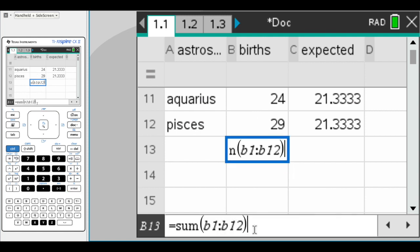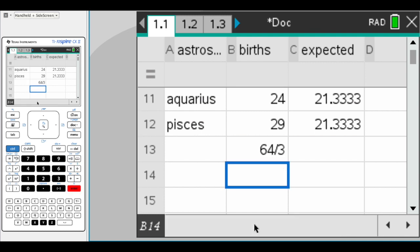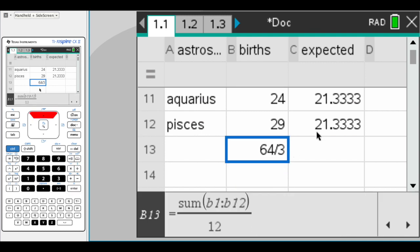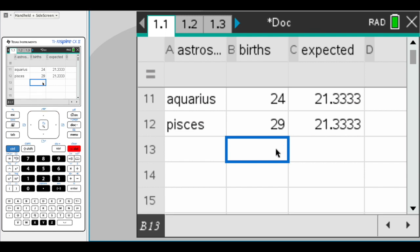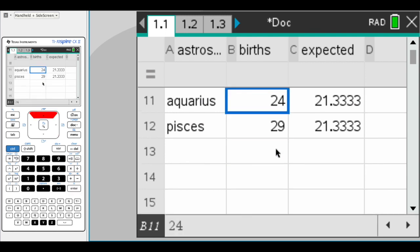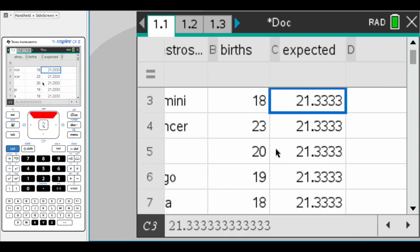We also saw that 256, how many births we should expect each month. If we divide that by 12, you get 64 over 3, which is 21 and a third. So I typed 21 and a third, so 21.3 repeated, all the way down in the expected column.